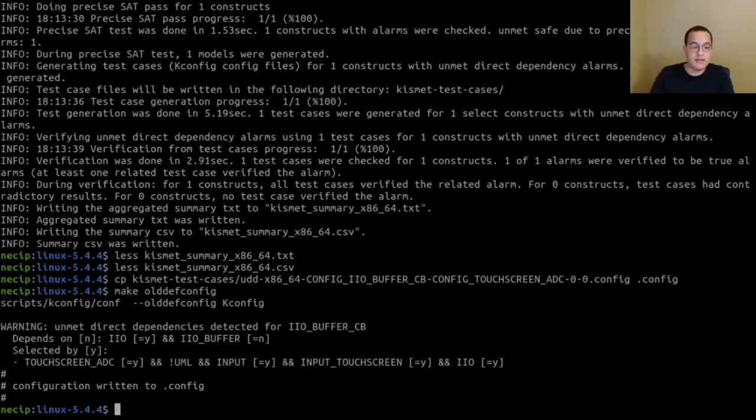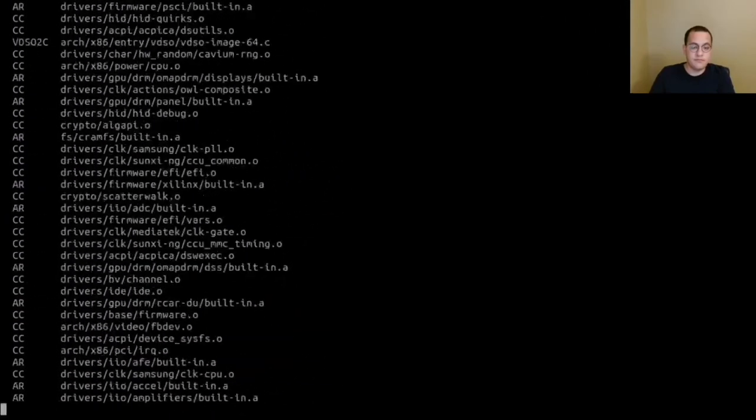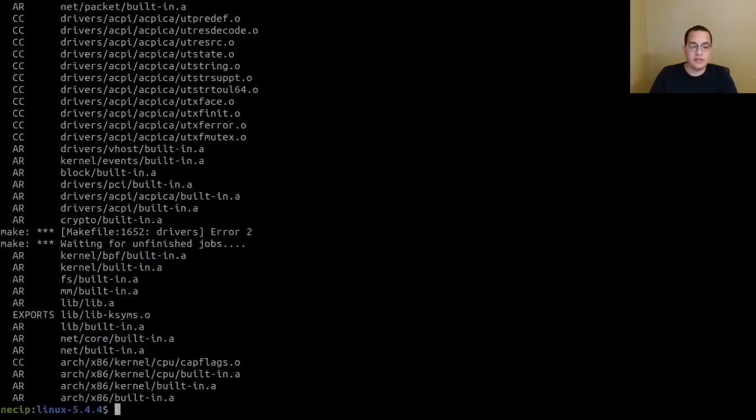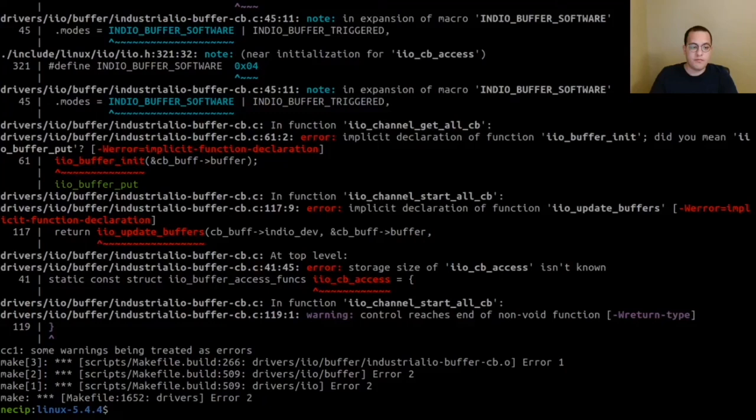To speed up, let's compile this in a parallelized manner. So we actually see some error messages, but we miss them because of the parallelization. Let's run make once more without parallelization so that we can see the error message more clear. As you can see, there is a compiler error and when we further investigated this build error, we found out that the unmet dependency bug was the root cause. And this was also confirmed by the Linux maintainers. And our fixing patch is merged into the mainline kernel.